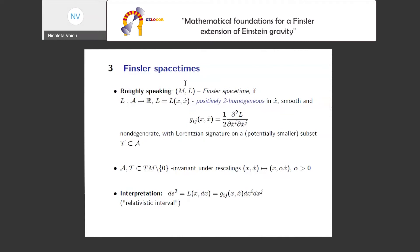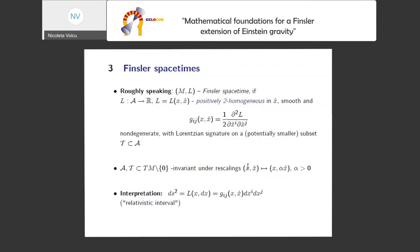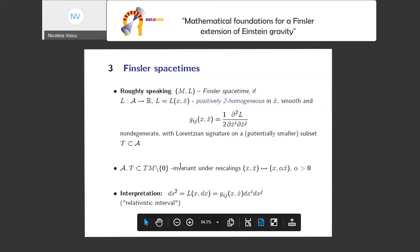Roughly, we have a four-dimensional manifold M equipped with a function L defined on a conic subbundle of the tangent bundle — something depending on positions and tangent vectors with real values — such that the Hessian with respect to the vectors is non-degenerate with Lorentzian signature on a possibly smaller subset T in A, or on the whole of A. Here, ẋ is just notation for a tangent vector; it doesn't imply a parameterized curve. The essential thing is homogeneity, and the domain must be invariant under positive rescalings — this is a conic set.